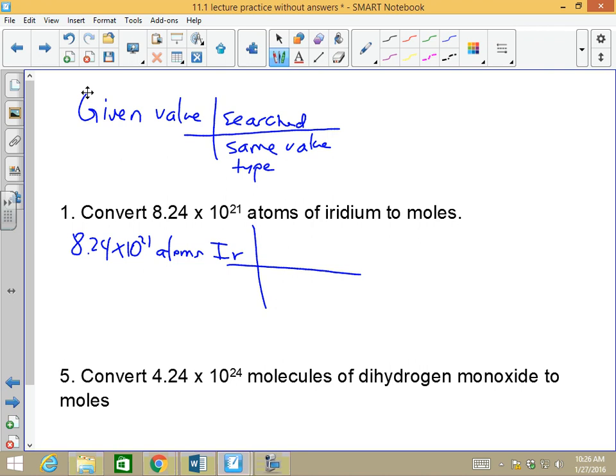6.022 times 10 to the 23rd. That would be atoms of iridium. I'm looking for moles. The ratio of atoms to moles is 6.022 times 10 to the 23rd to 1 mole of anything, 1 mole of iridium. When I multiply 8.24 times 1 divided by 6.022 times 10 to the 23rd, you should get 0.01364 times 10 to the negative 2 moles of iridium.